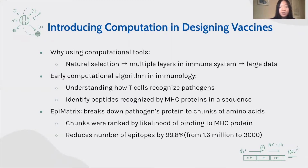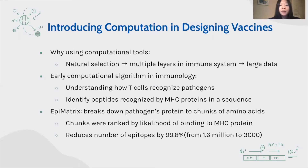Early stages of computational immunology were quite simple. Degu is the founder of Epivax, a computational immunology company, and her first computational algorithm was to understand how T cells recognize pathogens. She copied a gene sequence into a word processor and thereby identified peptides that are recognized by MHC proteins, and the code worked. What resulted from the simple algorithm was EpiMatrix, which breaks down pathogen proteins into chunks of amino acids. This invention allowed us to reduce 99.8% of the epitope sequence, making the vaccine design process more efficient than ever.